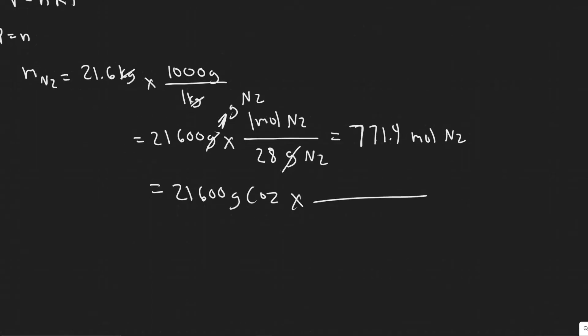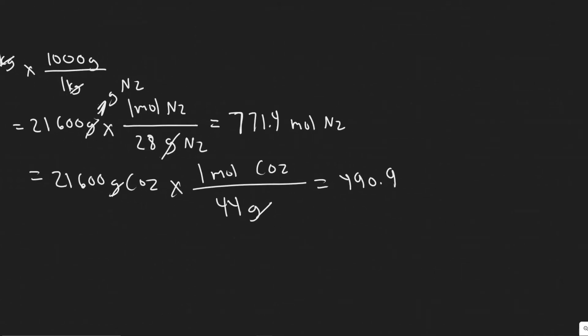But essentially, we know that you need to know for this one that the molar mass of CO2, if you look it up, it's 44 grams for every single one mole CO2. So in this case, you're going to be dividing 21,600 by 44. And you will get 490.9, so about 491. This is of mole CO2.